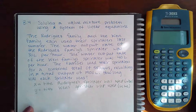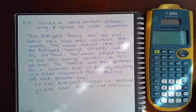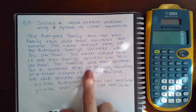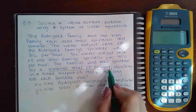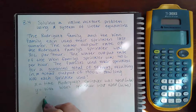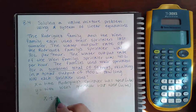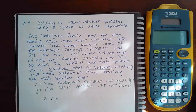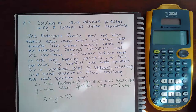We'll start off with some information that I know. I know that a combined total of 55 hours was used, which means that's one equation. The hours that the Rodriguez family was using their sprinkler, plus the hours that the Wynn family was using their sprinkler, together should equal 55 hours total.